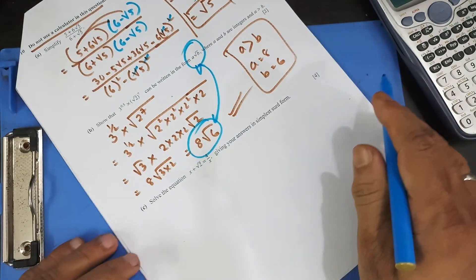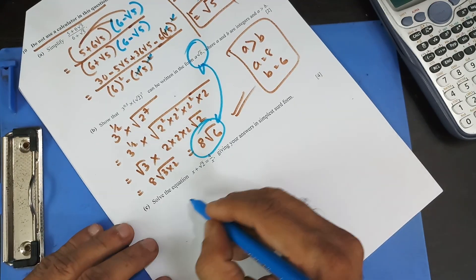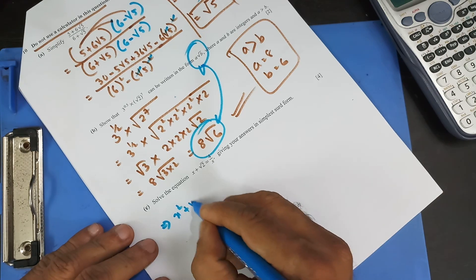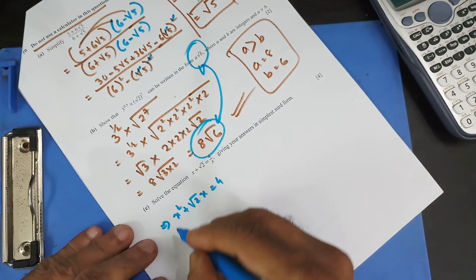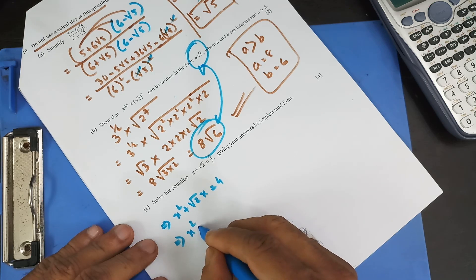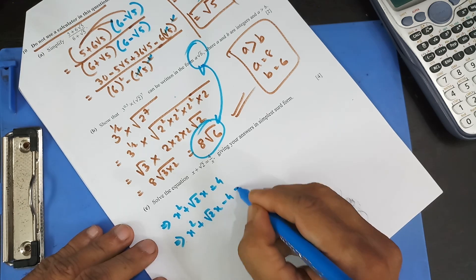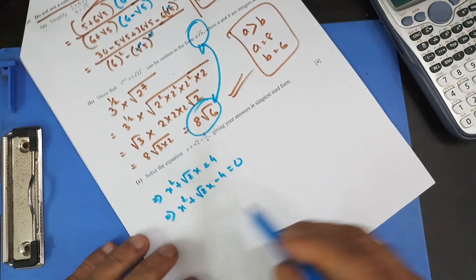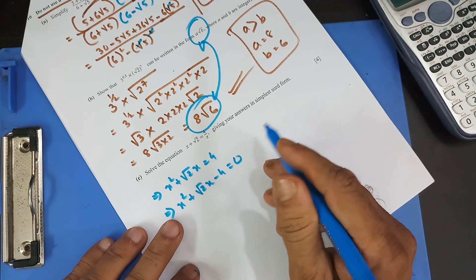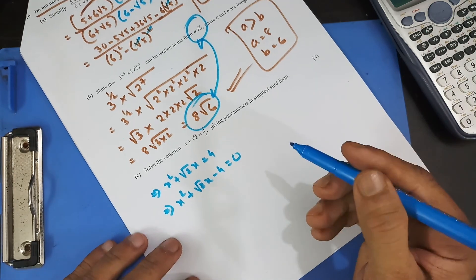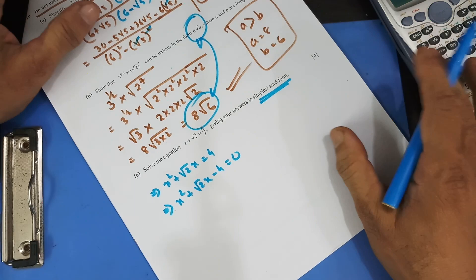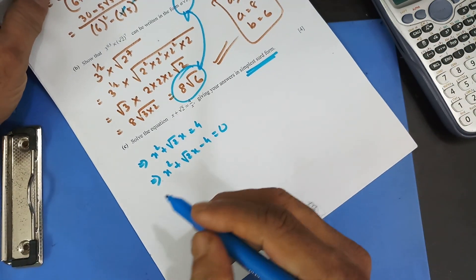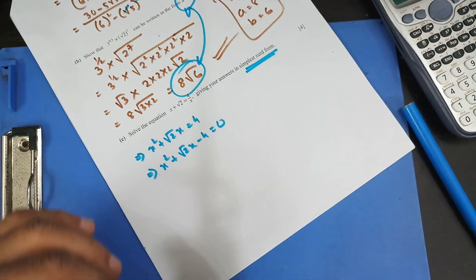Now solve the equation. I'm going to bring the x terms together: x squared plus square root 2 times x equals 4. Bringing 4 to this side: x squared plus square root 2 times x minus 4 equals 0. This looks like a quadratic equation — x to the power 2, x to the power 1, x to the power 0. Since this is 4 marks and we cannot use the calculator, we're going to use the quadratic formula.